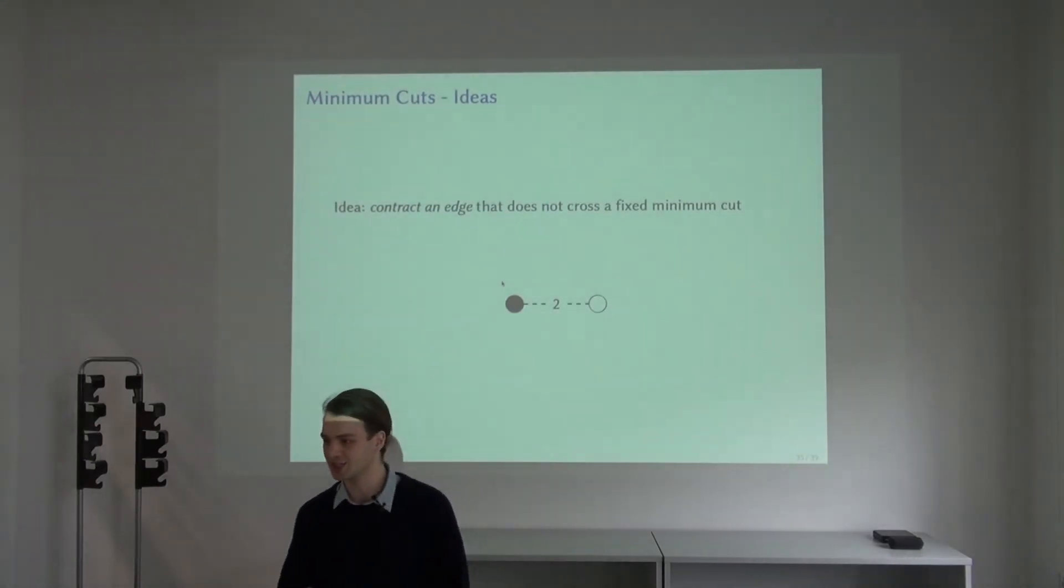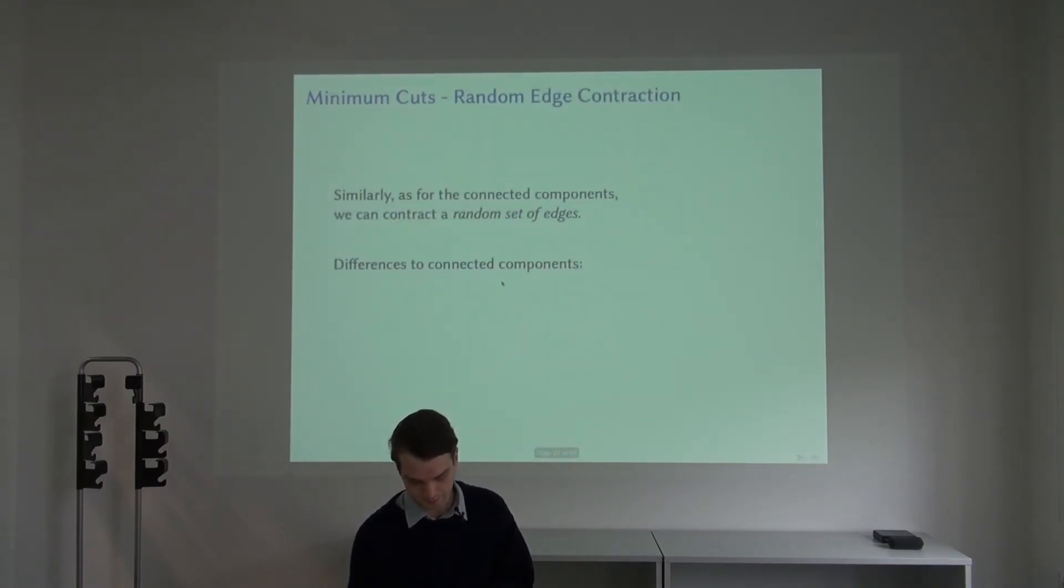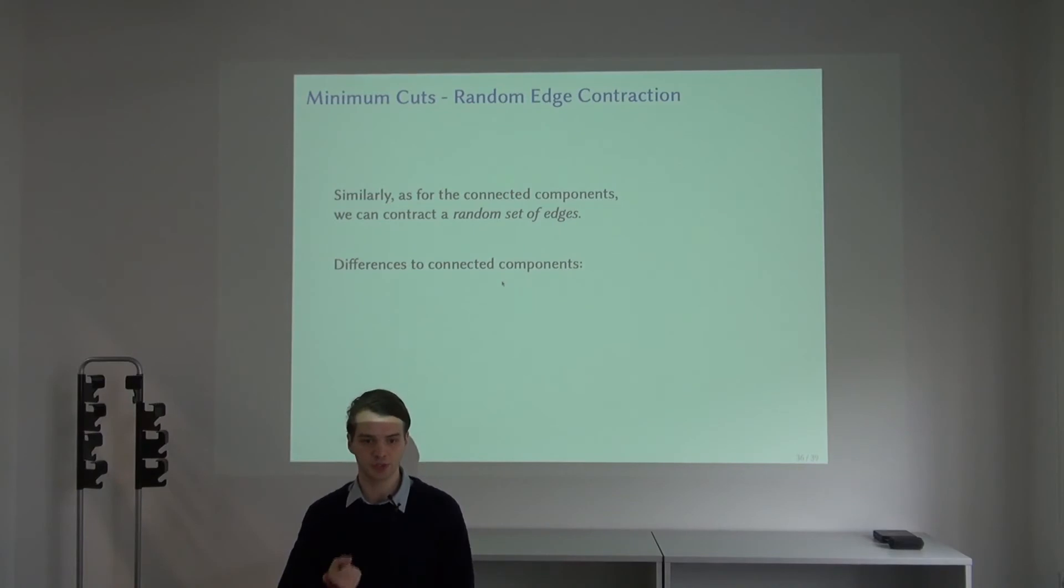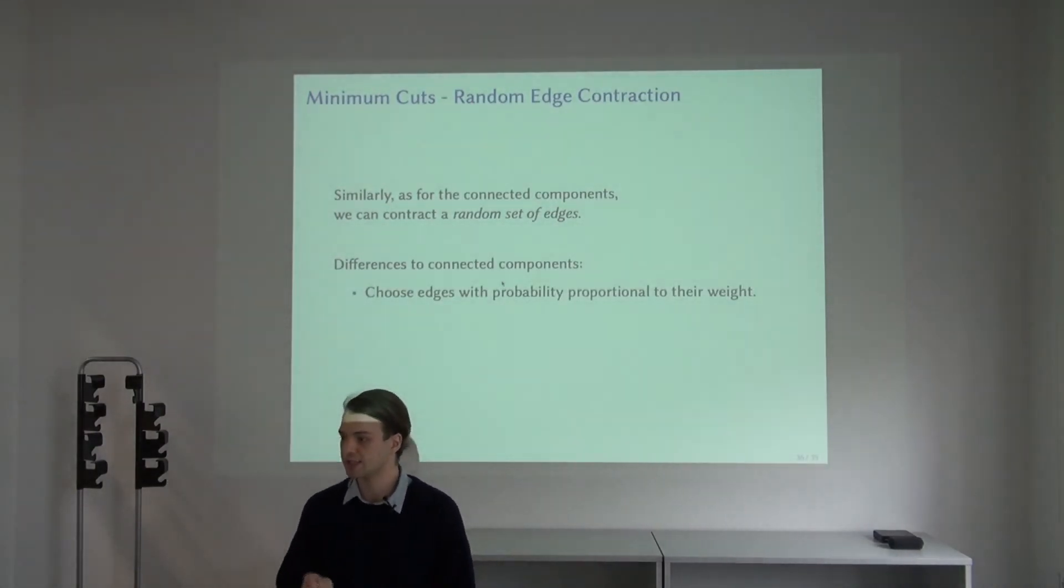Here again, the idea of randomness was very useful. The intuition is that because the minimum cut has a small fraction of the total weight of the edges, choosing an edge with probability proportional to its weight, there is a small probability that it will end up being an edge in the minimum cut.